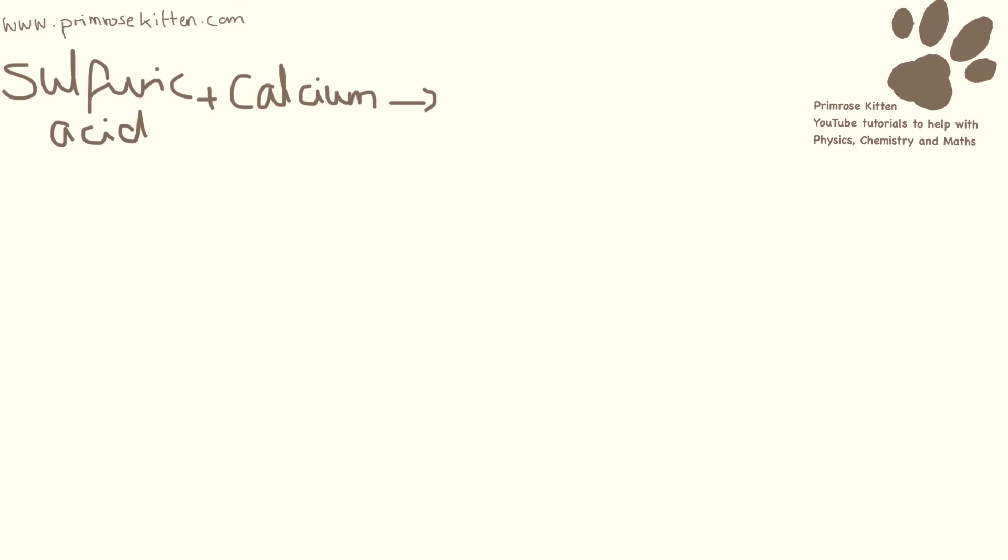Sulfuric acid and calcium. Again, a salt and hydrogen will be produced. The salt is going to be calcium. The metal goes first. And because it's sulfuric acid, it will be calcium sulfate and hydrogen.